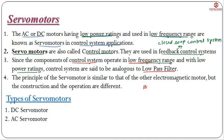We also know that bandwidth is proportional to noise. If we operate at high frequency then bandwidth will be more. The principle of the servo motor is similar to that of the electromagnetic motor but the construction and operation are different. Servo motors are of two types: first is DC servo motor and the next type is AC servo motor.